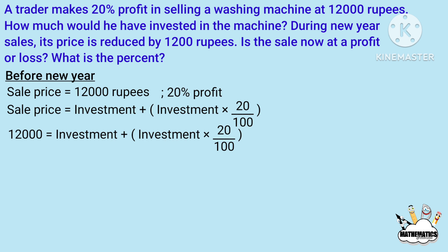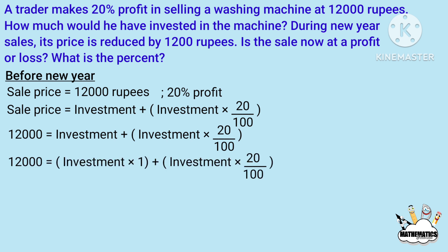The selling price is equal to investment into 1 plus 20 by 100. So, 12,000 is equal to investment into 1 plus 20 by 100.